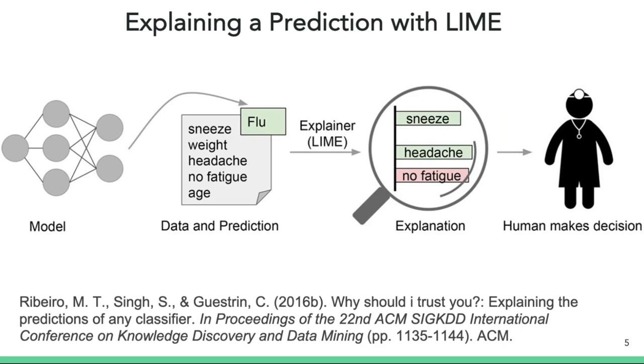Here's a conceptual example of using LIME to explain an individual prediction for whether or not the patient has the flu. A machine learning model takes in a list of symptoms and patient attributes. Categorical features include: is the patient sneezing? Is the patient experiencing fatigue or headache? And continuous features include the weight and age of the patient.